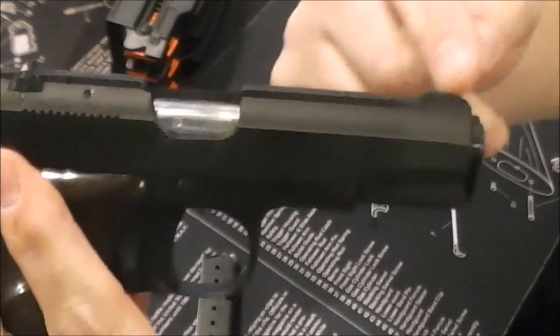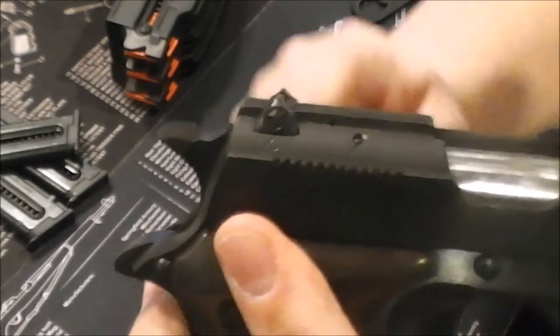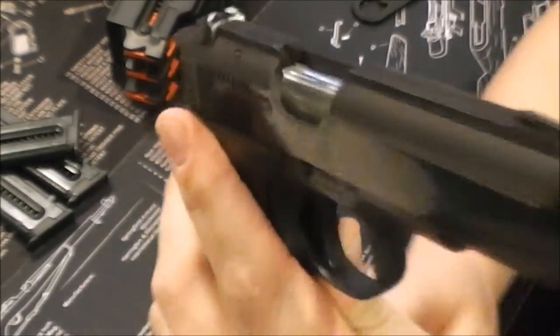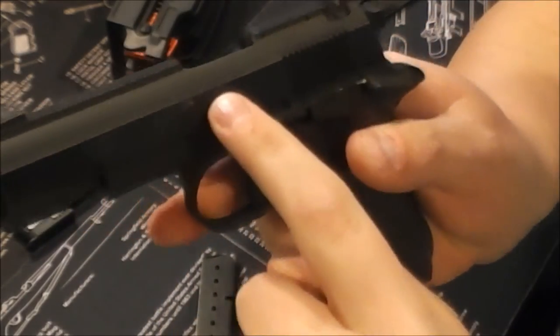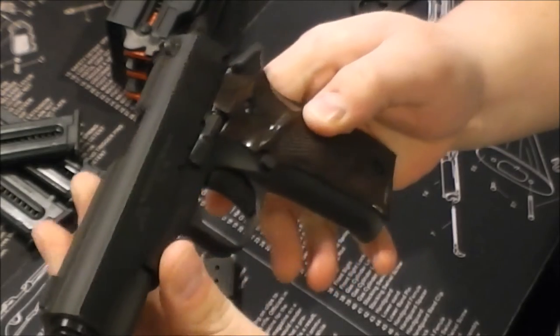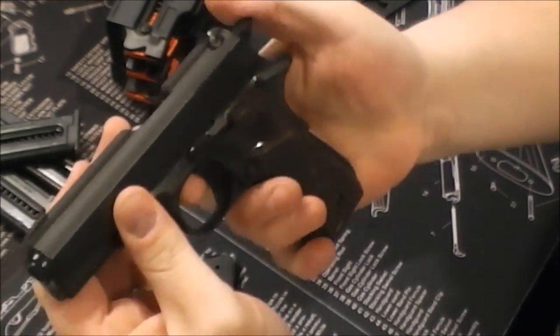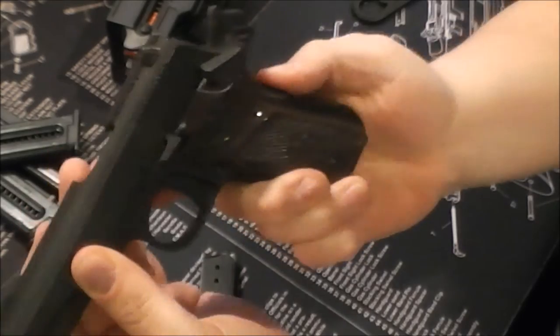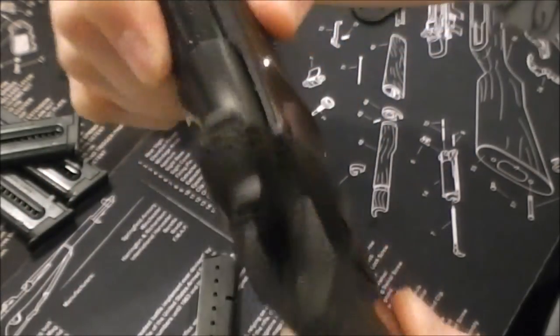Of course, you notice that the sights are slightly different. They are adjustable. And internally, the barrel has no swinging link. So, other than that, the controls are exactly the same. Cocked and locked. A working grip safety.